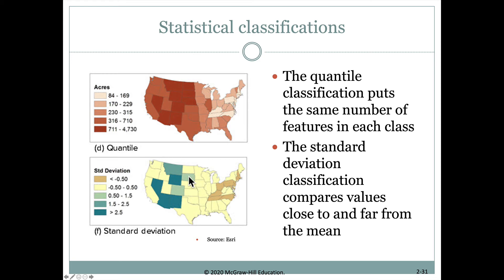So the states with about average values appear in the middle categories, the lowest values are shown in brown, and the highest are in dark blue. This approach looks at the numbers from a statistical perspective, using standard deviation to create the classes or categories for our choropleth map.